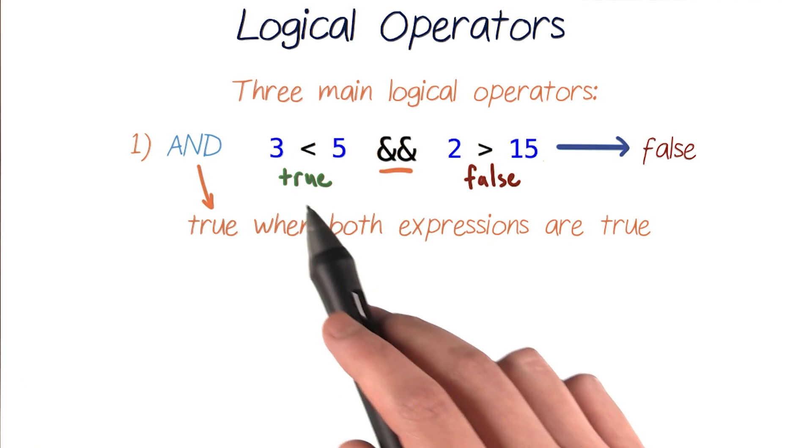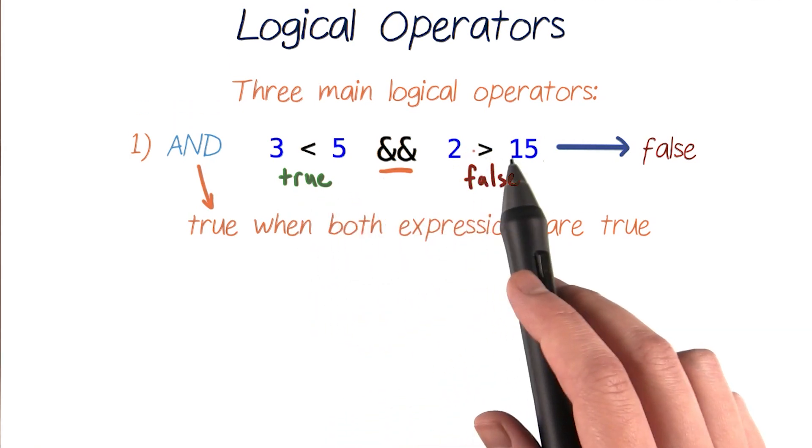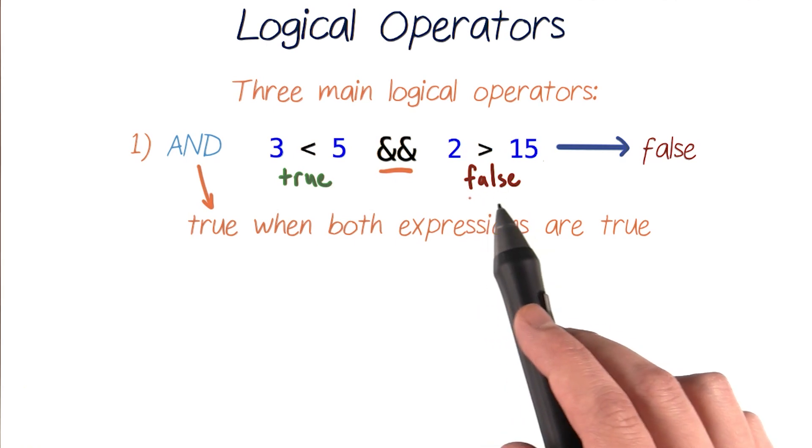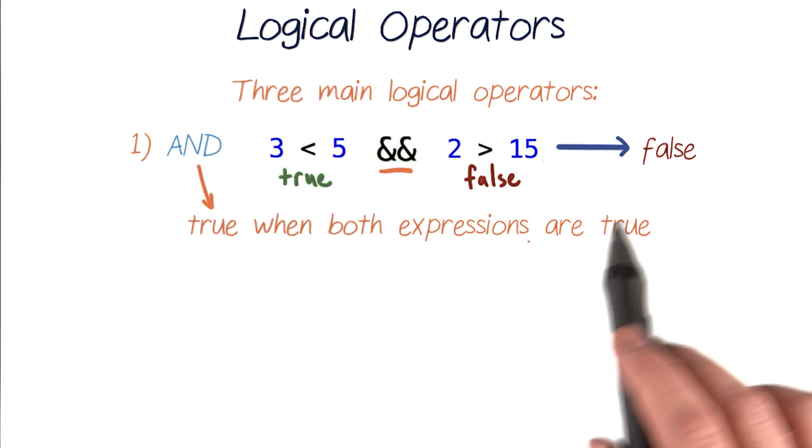So in this example, the test 3 < 5 is true. But on the right, 2 is not greater than 15, so this expression evaluates to false. And because just one of these expressions is false, this whole AND combination will evaluate to false.